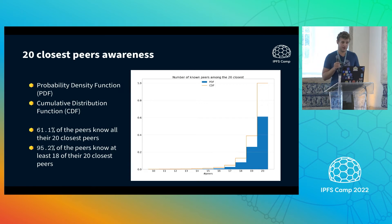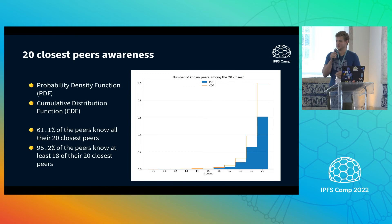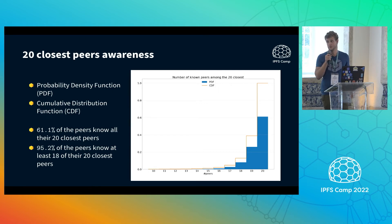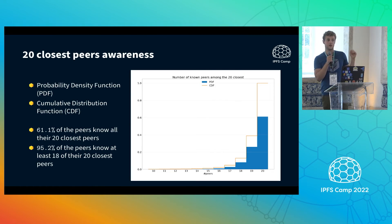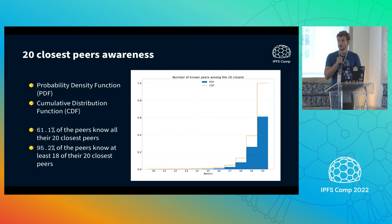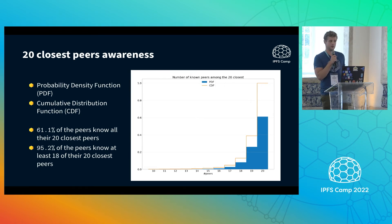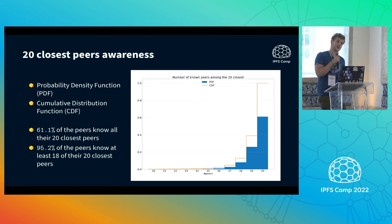Regarding the 20 closest peer awareness: you have to know your neighbors and your neighbors have to know you for routing to work. Our result is that 61% of peers know all of their 20 closest peers — excellent. And 95% of peers know at least 18 out of their 20 closest peers. It is not a critical failure to miss one peer, because you need at least one peer in your close neighborhood to know you to be accessible. In fact, we expect each node to know more than 19 closest peers because when you look up for yourself, you get the 20 closest peers to your identity and you are included — so we expect each node to know 19 closest peers plus itself.